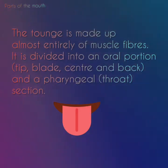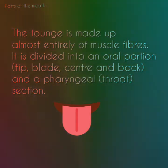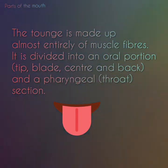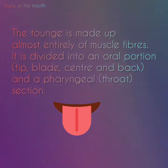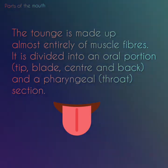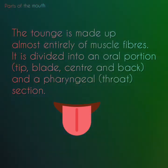The tongue is made up almost entirely of muscle fibers. It is divided into an oral portion — tip, blade, front, centre and back — and the pharyngeal throat section.